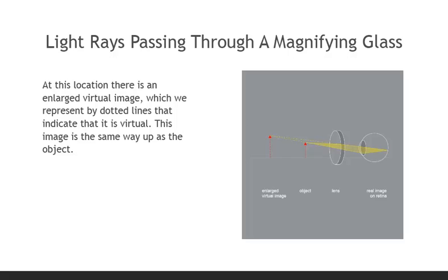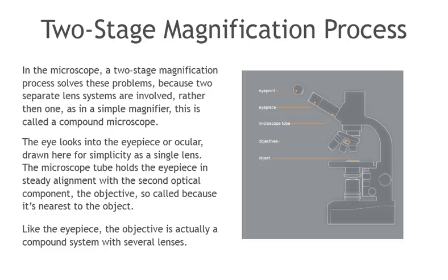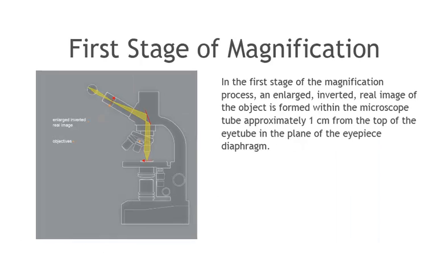In the microscope, a two-stage magnification process solves these problems because two separate lens systems are involved rather than one, as in a simple magnifier. This is called a compound microscope. The eye looks into the eyepiece, or ocular, drawn here for simplicity as a single lens. The microscope tube holds the eyepiece in steady alignment with the second optical component, the objective, so-called because it is nearest to the object. Like the eyepiece, the objective is actually a compound system with several lenses. In the first stage of the magnification process, an enlarged, inverted, real image of the object is formed within the microscope tube, approximately one centimeter from the top of the eye tube, in the plane of the eyepiece diaphragm. This is the function of the objective. The object is represented by a solid red arrow, and so is the real image.